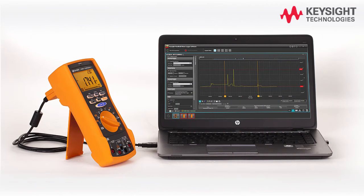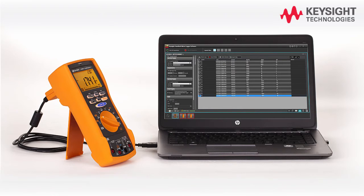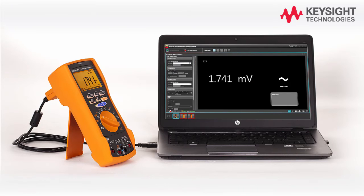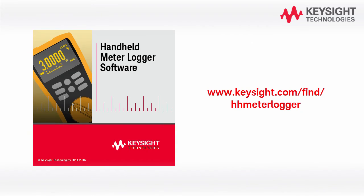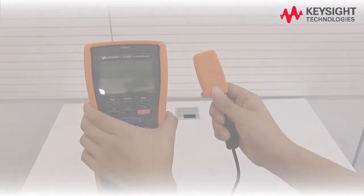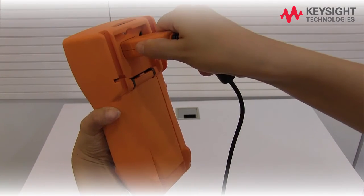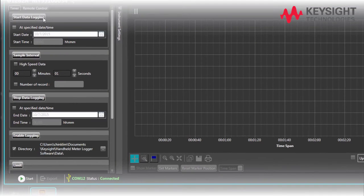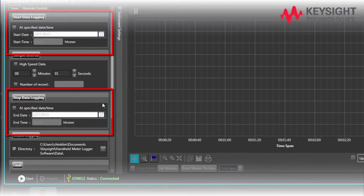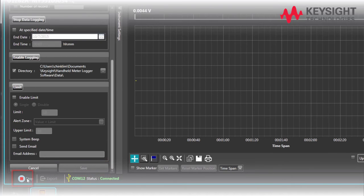The U1281A/U1282A allows you to perform data logging remotely with report generation capability. Before you start, make sure the Keysight Handheld Meter Logger software is installed. Connect your multimeter to the Keysight Handheld Meter Logger using the IR cable. Your tester will connect automatically. Set the data logging start and stop time accordingly and click SAVE. Click START to start data logging.